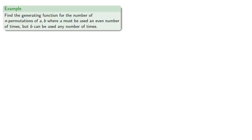Let's find a generating function for the number of n permutations of a and b where a must be used an even number of times, but b can be used any number of times.